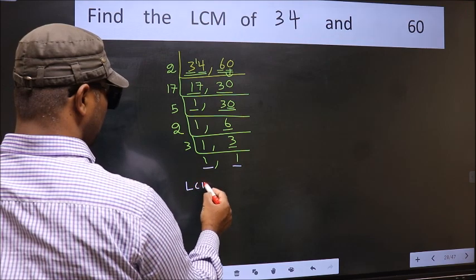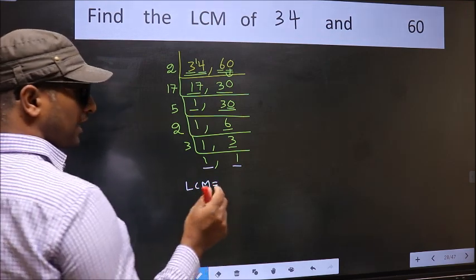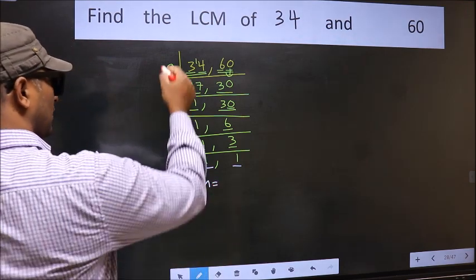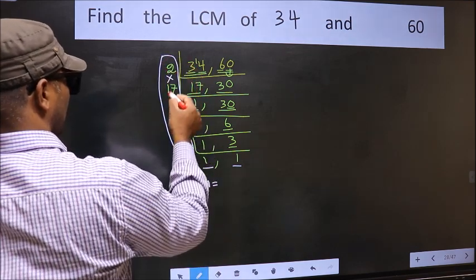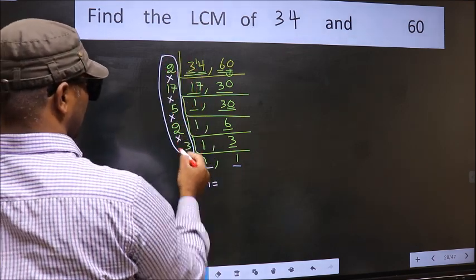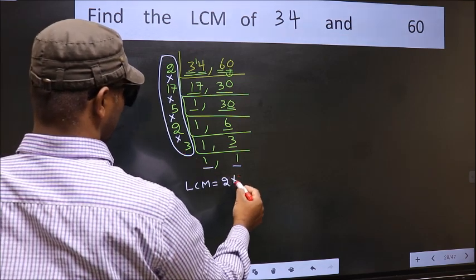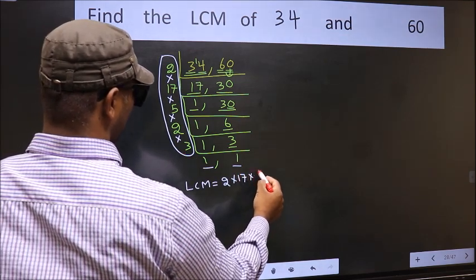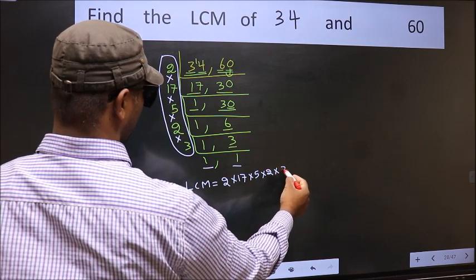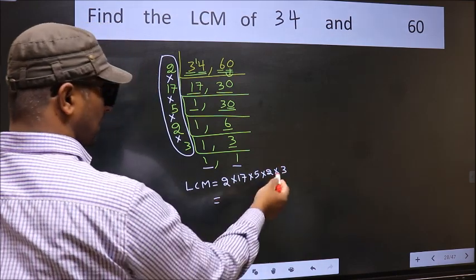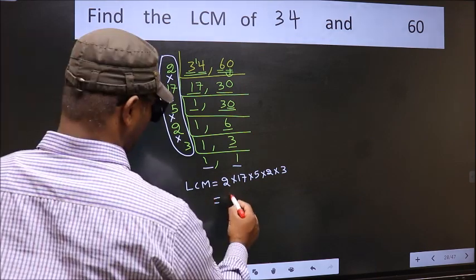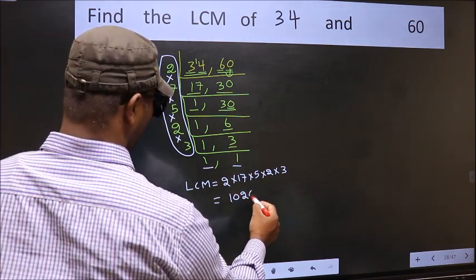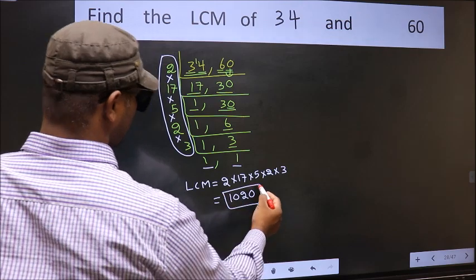So our LCM is the product of these numbers. That is 2 into 17 into 5 into 2 into 3. When we multiply these numbers we get 1020 as our LCM.